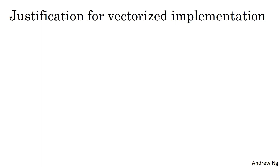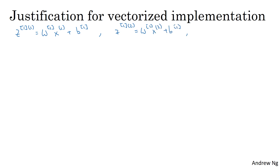Let's go through part of the forward propagation calculation for a few examples. For the first training example, you end up computing W1 times X1 plus B1. For the second training example, W1 times X2 plus B1, and for the third, W1 times X3 plus B1. To simplify the explanation, I'm going to set B equal to zero, though the argument works with just a little change even when B is non-zero.